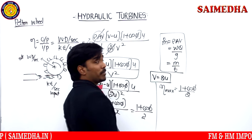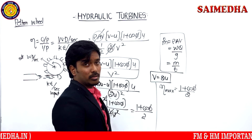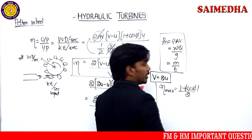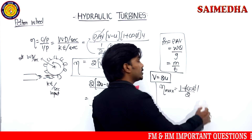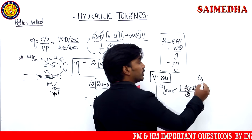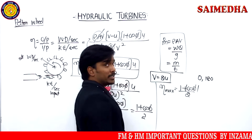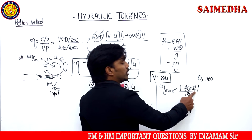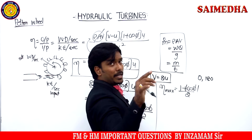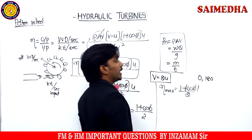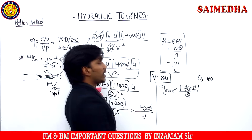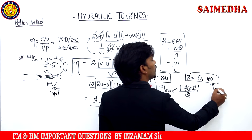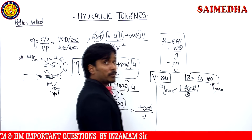Maximum efficiency is (1 + cos φ) / 2. This becomes maximum when φ equals 0° or 180°. If φ equals 0°, cos 0° equals 1, so (1+1)/2 equals 1, giving 100% efficiency. If φ equals 180°, cos 180° equals −1, but taking the modulus gives +1, again giving 100% efficiency. So for φ equals 0° or 180°, efficiency reaches maximum 100%.